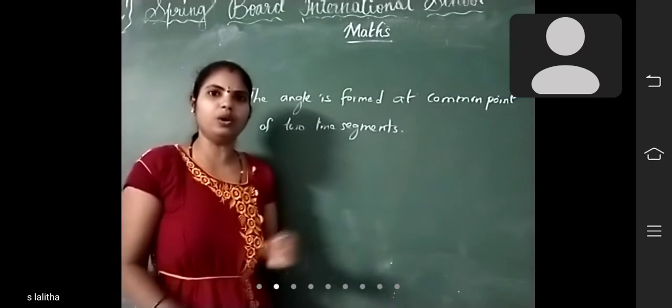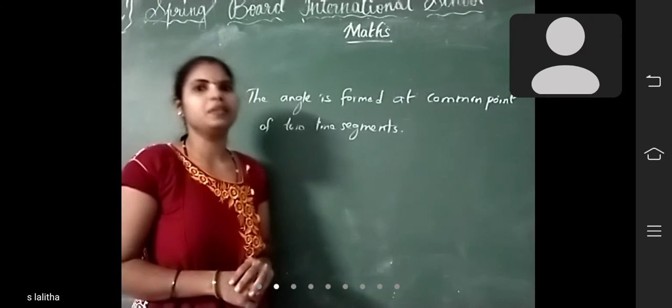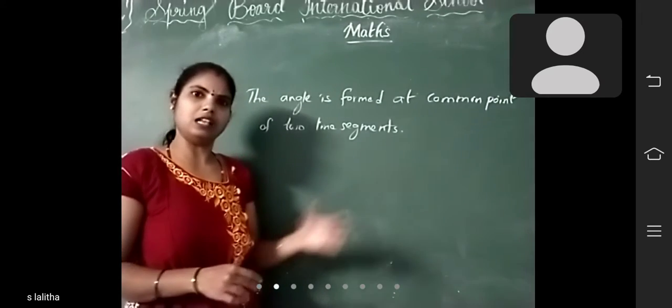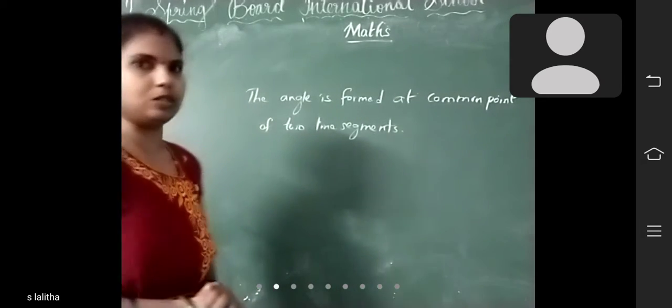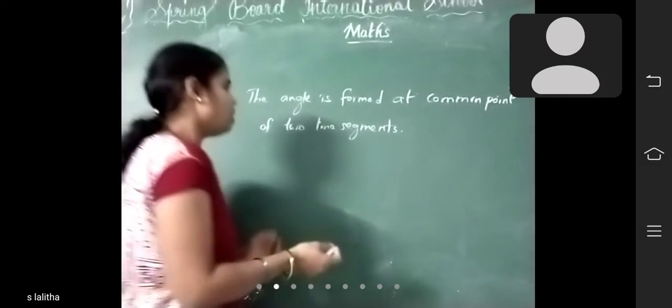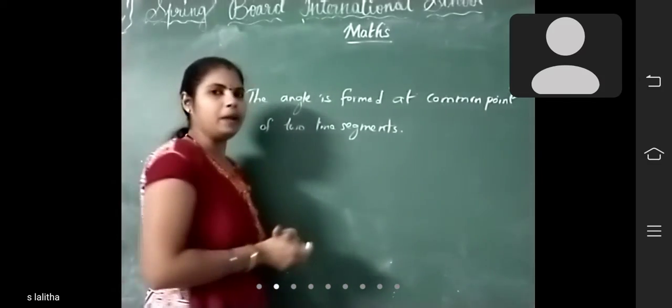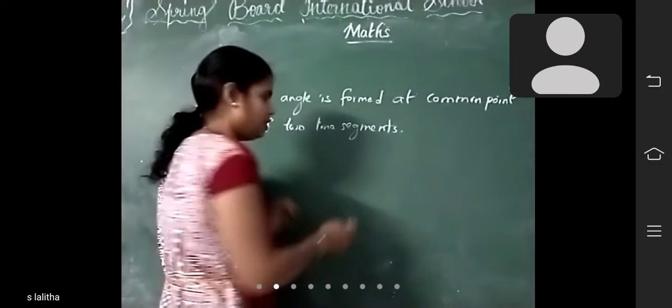Is it possible for two rays? Yes, it is also possible for two rays. So how is an angle formed?